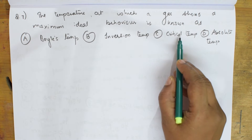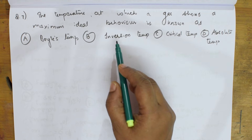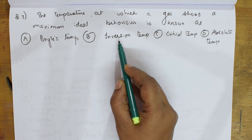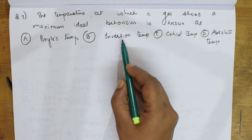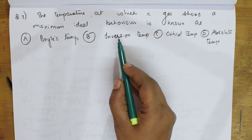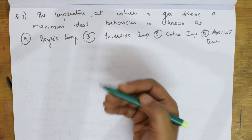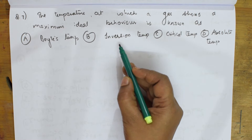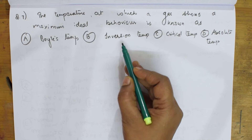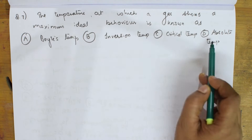Next, inversion temperature: at this temperature, a gas is neither heated nor cooled when allowed to expand. More precisely, inversion temperature is the temperature at which the Joule-Thomson effect for a given gas changes its sign — the gas is neither heated nor cooled upon expansion without exchanging energy. This has nothing to do with ideal behavior.